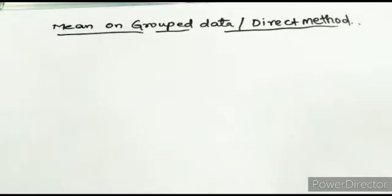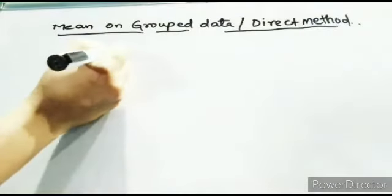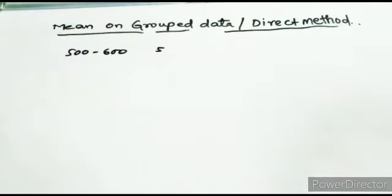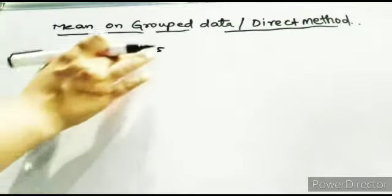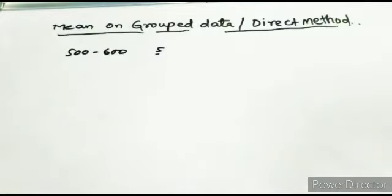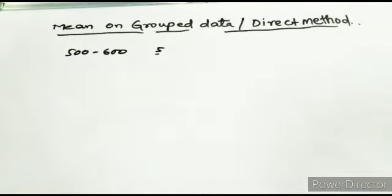Grouped data means you are grouping the data in the form of a range. For example, you are taking 500 to 600 — how many members have a height of 5 feet? You are finding the mean within this range. You are grouping the data in the form of class intervals. Whenever data is in the form of class intervals, you must compulsorily find out the mid values.